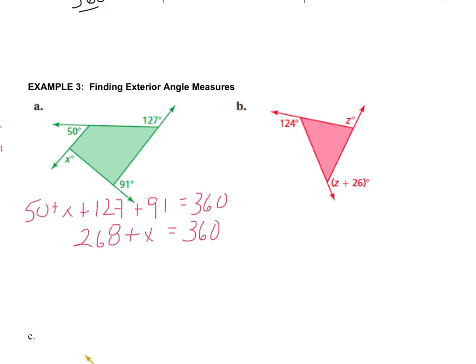Then, as my one step equation in this case, I would subtract the 268 to mean that the X angle is going to be 92 degrees. Now, I want you to try the next one, so you can hit pause, try it, and when you're ready to come back, come back and see how you did.